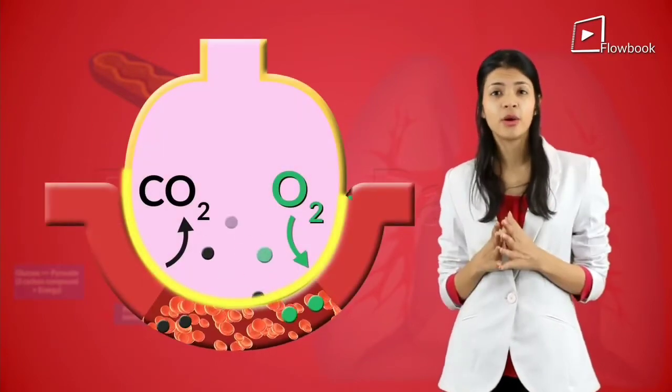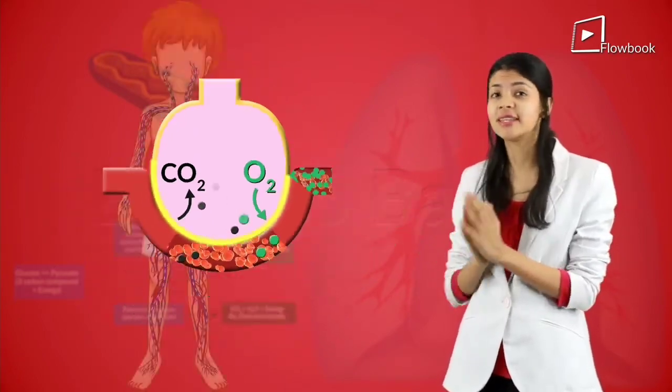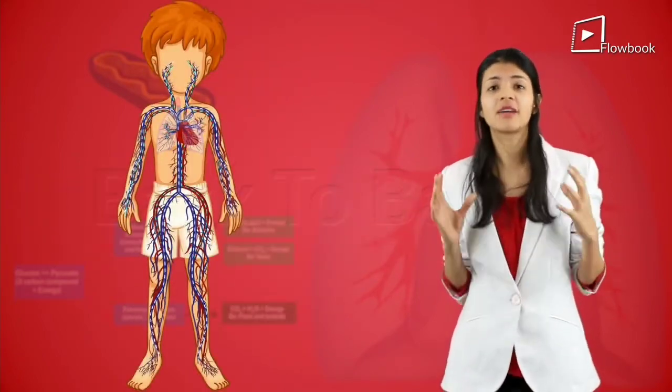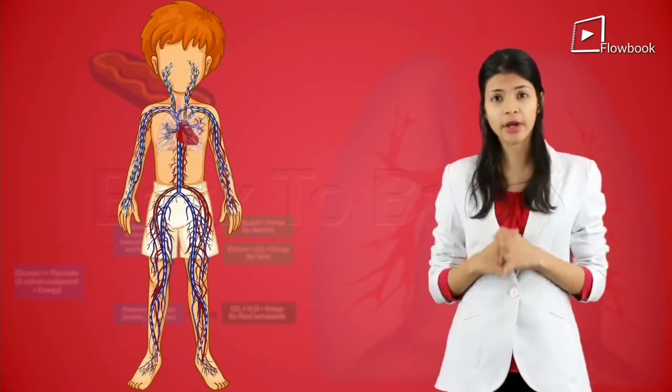The bright red blood which is now rich in oxygen is taken to the heart by these capillaries. The heart then pumps this blood to the rest of the organs of your body.